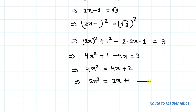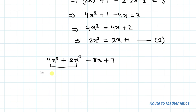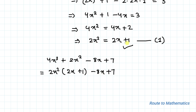We are asked to find 4x³ + 2x² - 8x + 7. In the next step, let's factor out 2x² from the first two terms, so we have 2x² multiplied by (2x + 1), minus 8x + 7.